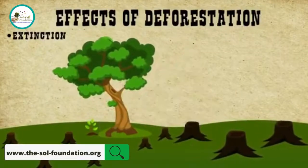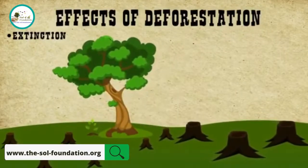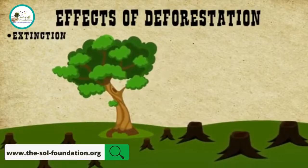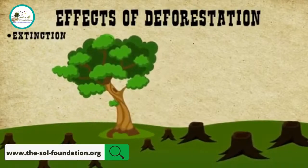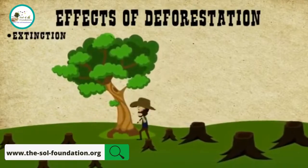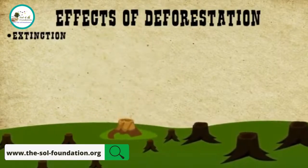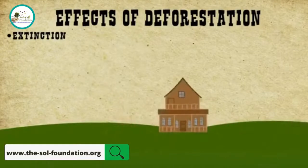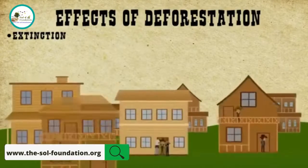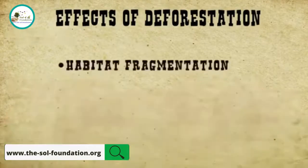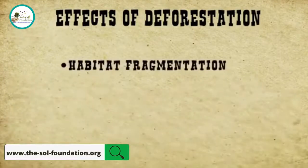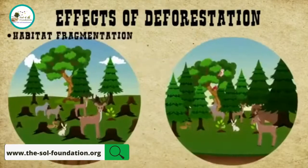Under the big trees there are often no little trees. When the big trees are cut down, there will be nothing to replace them other than housing developments. Habitat fragmentation: this is where homes are disturbed and animals are caused to move into other habitats that are already occupied.